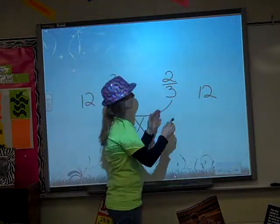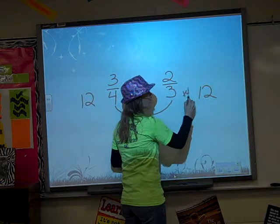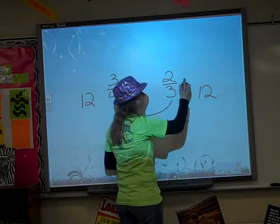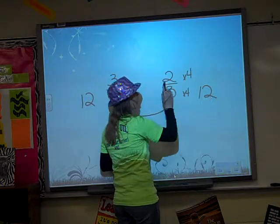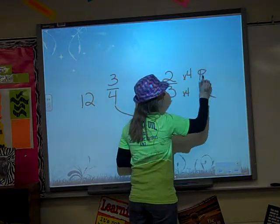So I'm going to take 2 thirds and I know I multiplied the 3 times the 4 and to make an equivalent fraction whatever happens to the bottom should also happen to the top. So if I did the 3 times the 4, now I need to do the 2 times the 4 and 2 times 4 is 8.